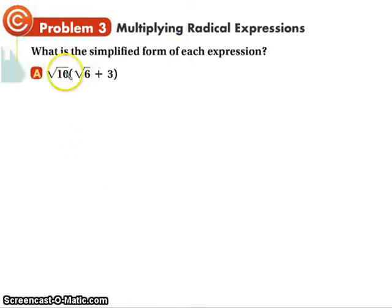Now we're multiplying. This is just distributive. So we're going to take the square root of 10 times the square root of 6 and the square root of 10 times 3. So we get the square root of 60 plus 3 root 10. The question is, are we done?